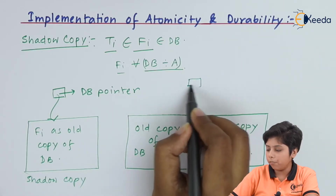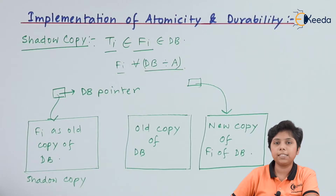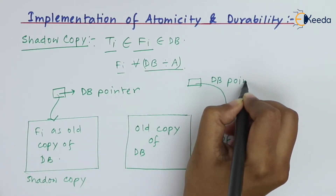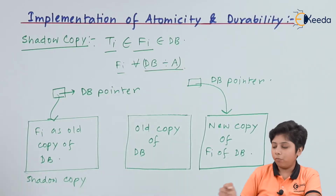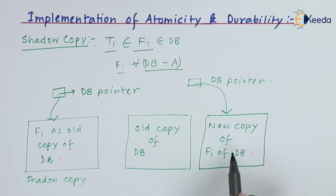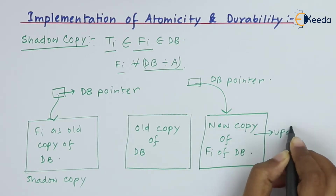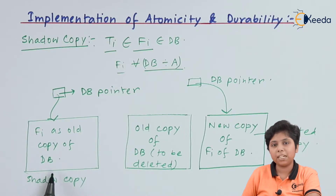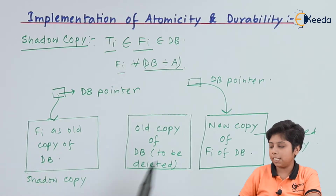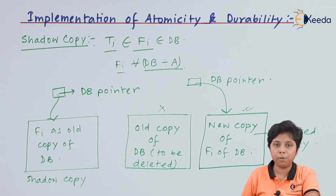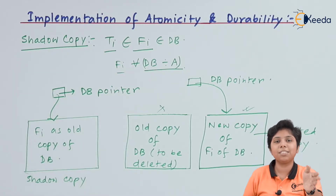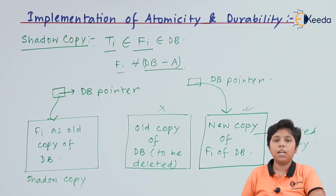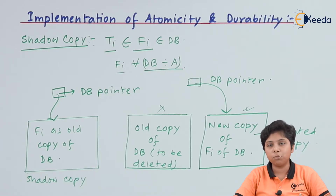The DB pointer now points to the new copy instead of the old copy. When the update is made to this new copy, we consider it an updated copy. The old copy of the database will be deleted, and this new copy — once updated — becomes the current database, while the previous version becomes the shadow copy, left behind the pointer.